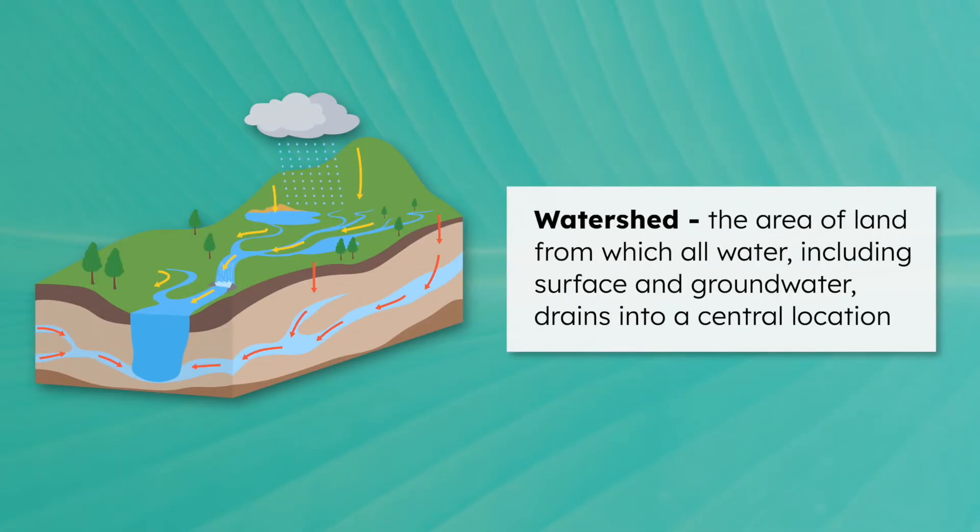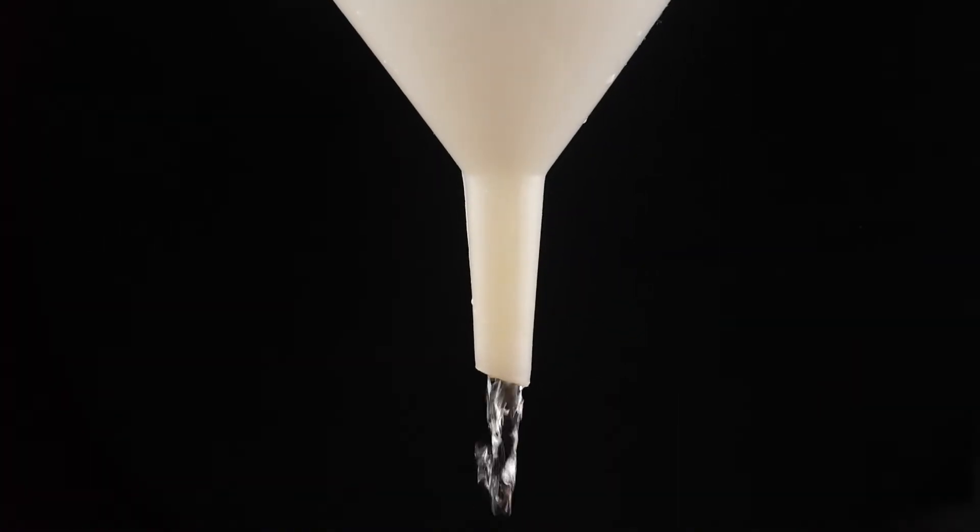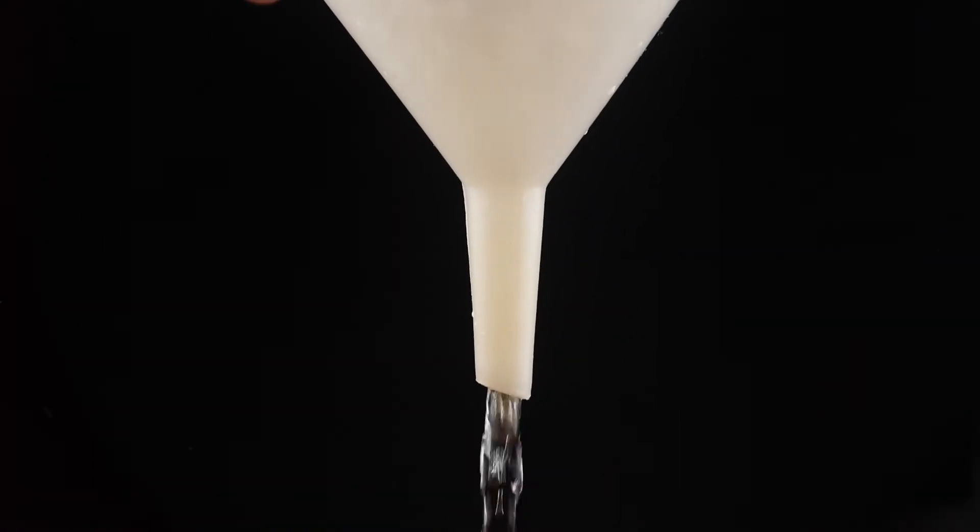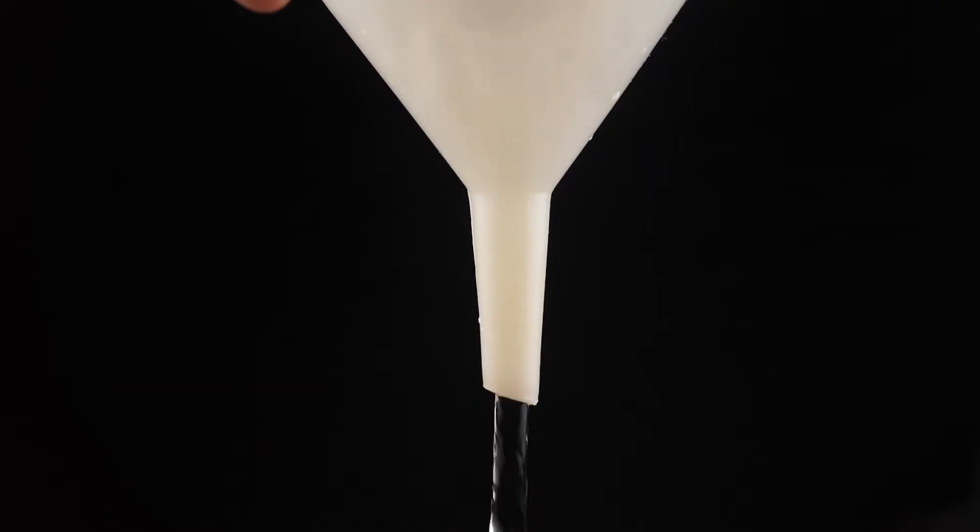A watershed is the area of land from which all water, including surface and groundwater, drains into a central location. All of these smaller sources of fresh water drain into a big water resource. You can think of this like a big funnel, directing water from a larger area into one central location.